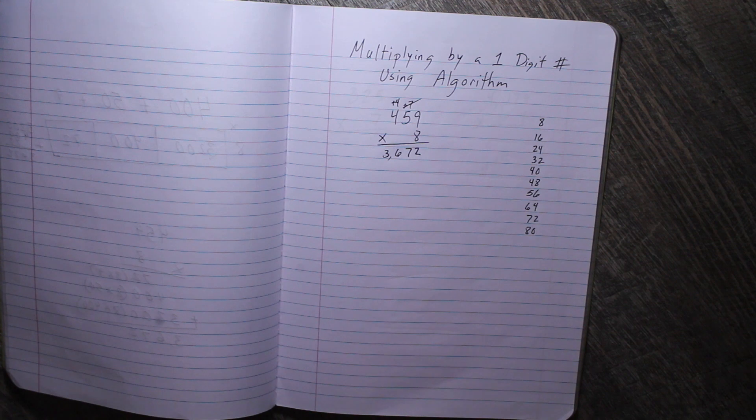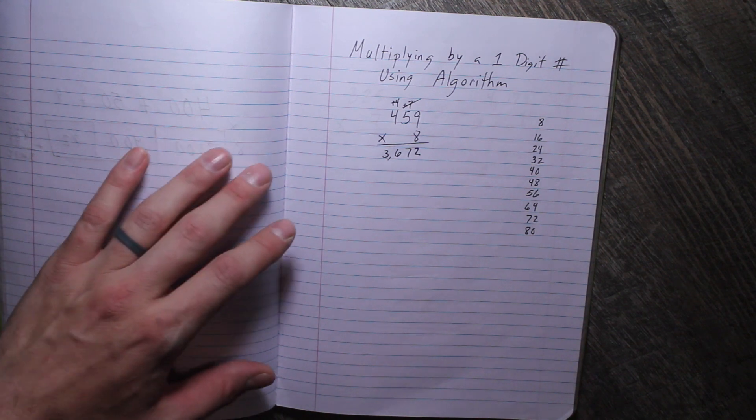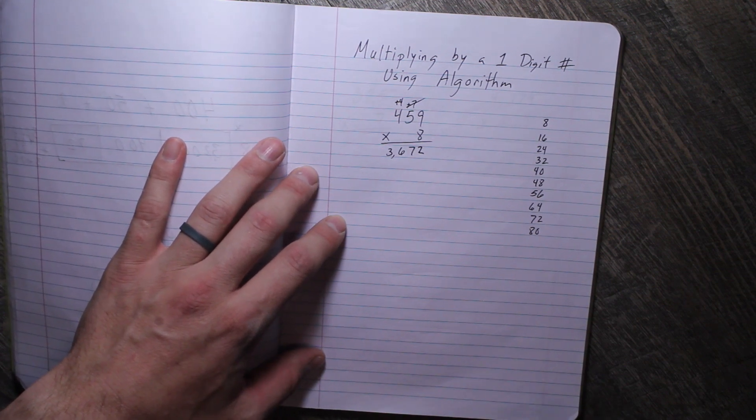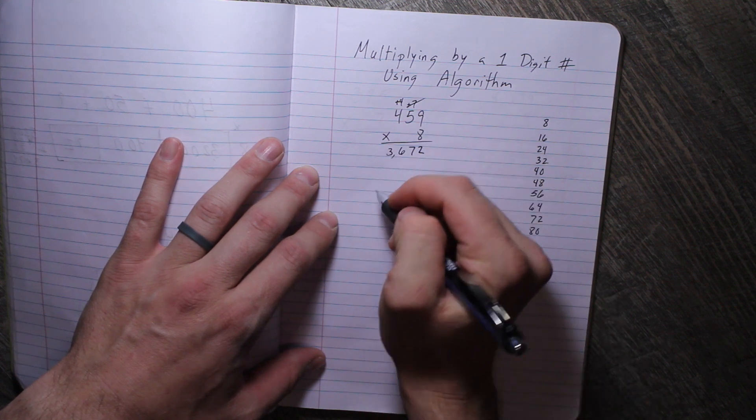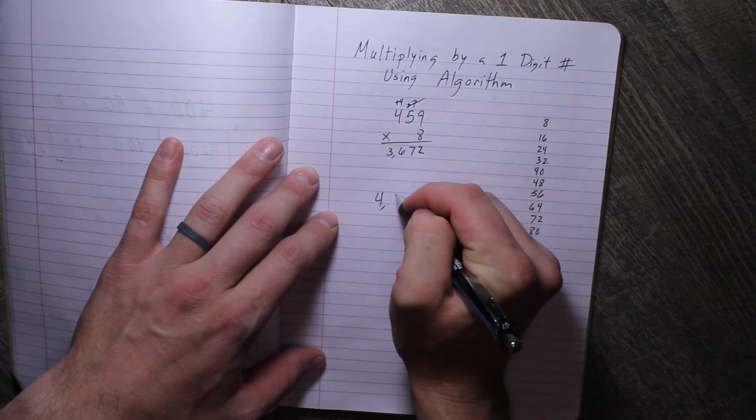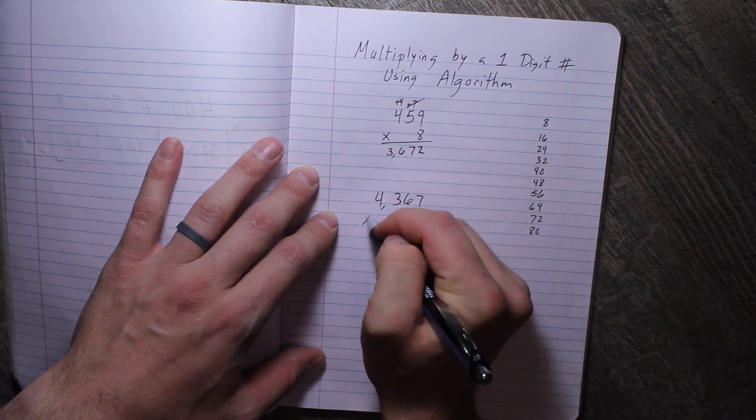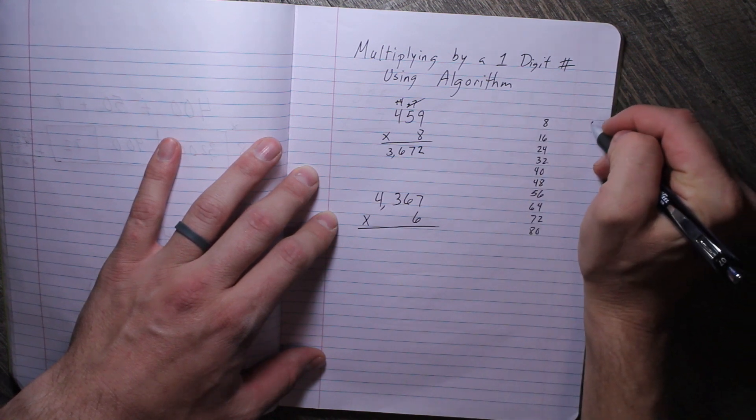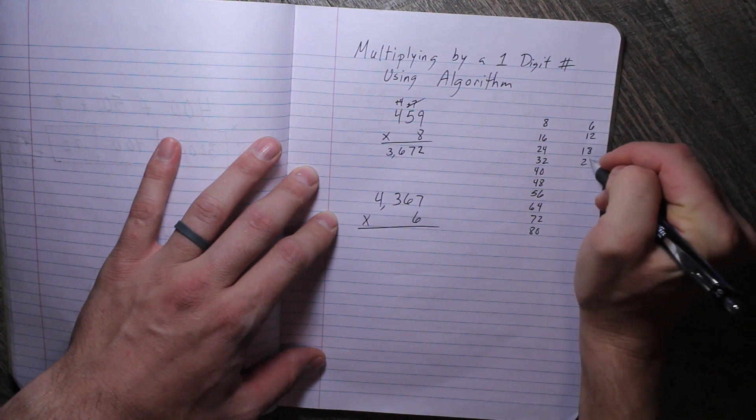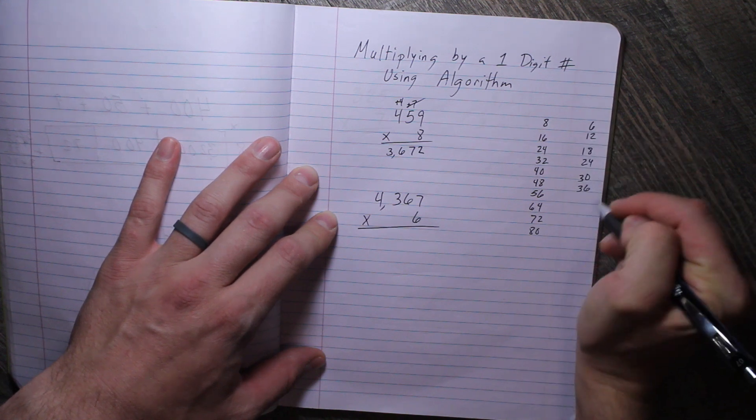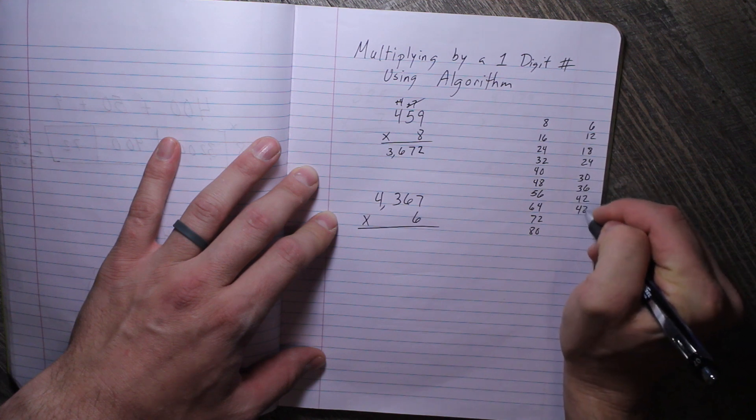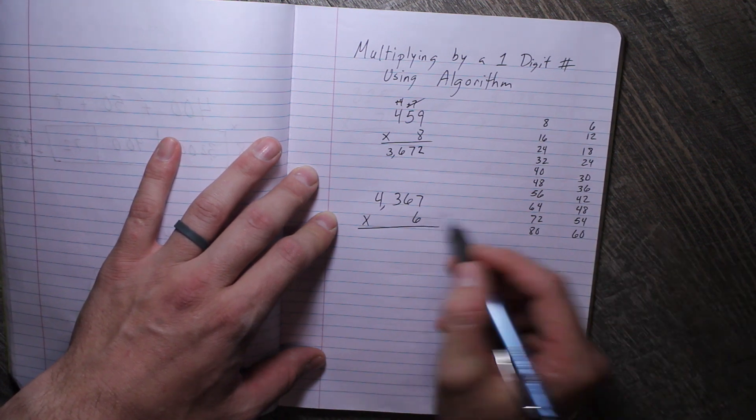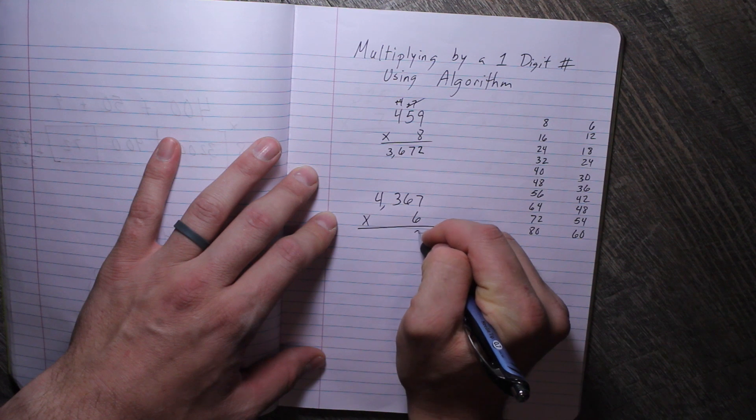So let's do this again. We're going to try another problem, but what if we have four digits? Will that work too—a four-digit by a one-digit? So let's go ahead and try 4,367 times, let's do a different number, 6. And again, if I don't know my multiples of 6, I can write them to the side: 6, 12, 18, 24, 30, 36, 42, 48, 54, and 60.